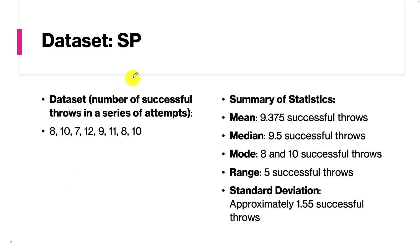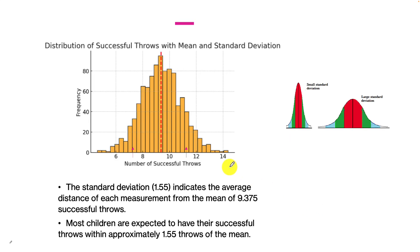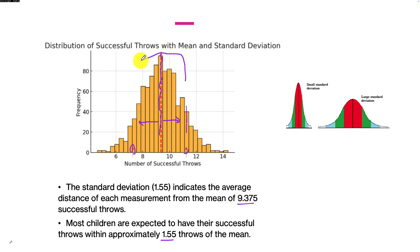For sports psychology — looking at successful throws in a series of attempts — we have a mean of 9.375, a median of 9.5, a mode of 8 and 10, a range of 5, and a standard deviation of 1.55. Graphing this, most scores fall within 1.55 in each direction from the mean of 9.375. The majority of data occupies that central space, with some outliers on each side.